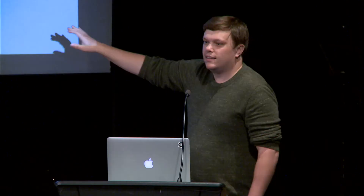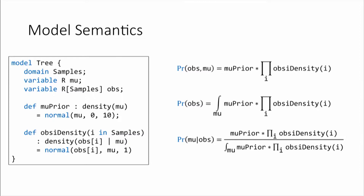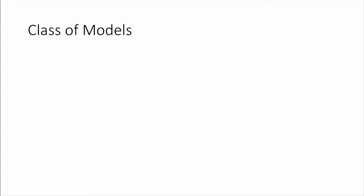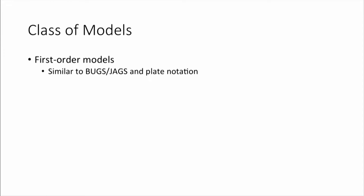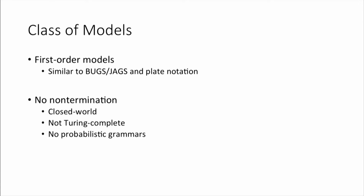I want to pre-answer some questions about the class of models we're dealing with. It's a very simple modeling language — first-order, similar to BUGS or JAGS or plate notation. Models are all bounded size, so you can't have non-terminating models, and we're not using a measure-theory semantics, so representing determinism can be a little tricky.